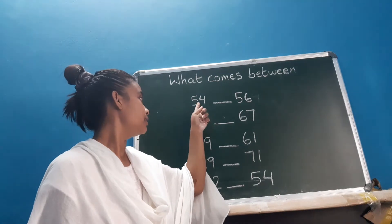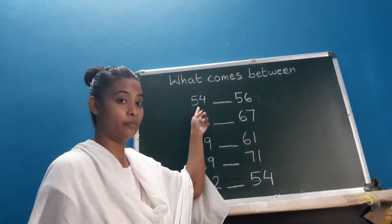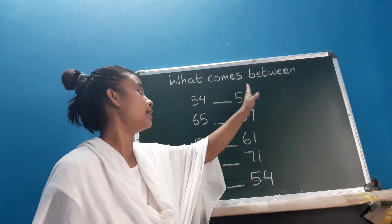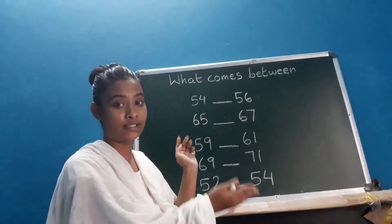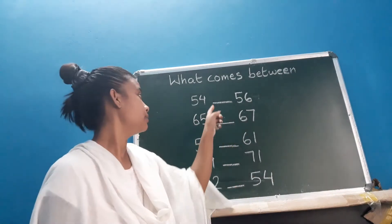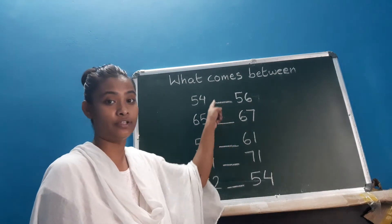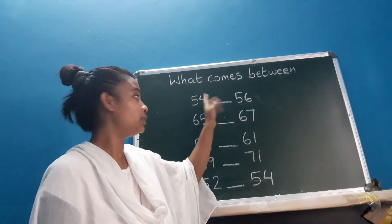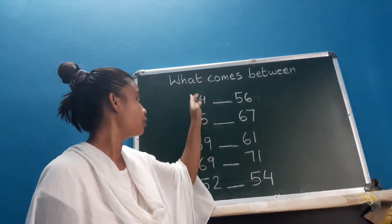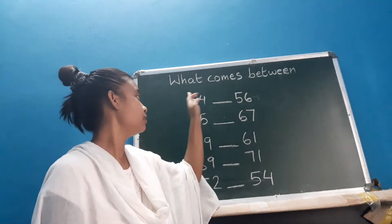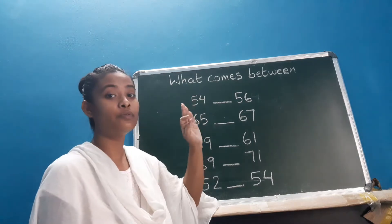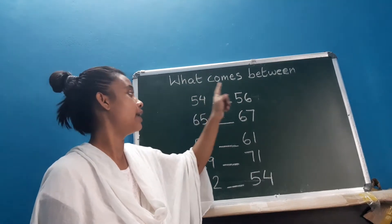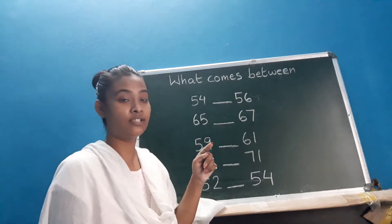As you can see here, there is one number on the left hand side and another number on the right hand side. But there is a blank space over here. So which number will come in between 54 and 56? Which number will come between 54 and 56?